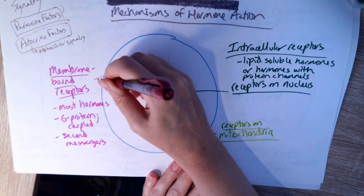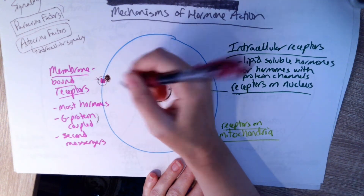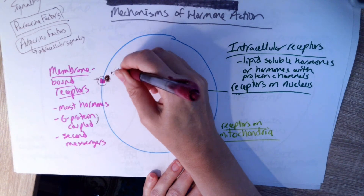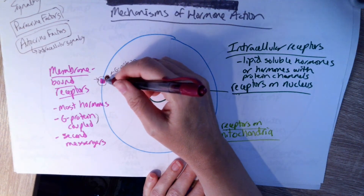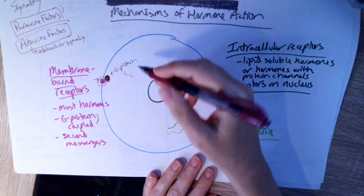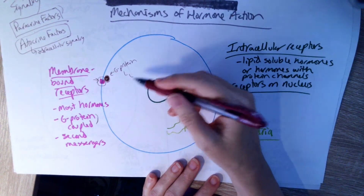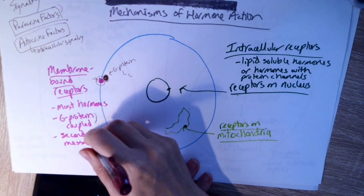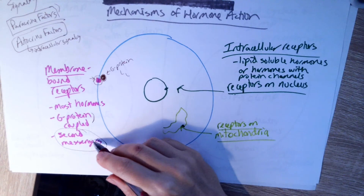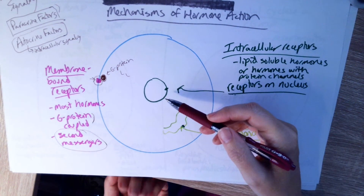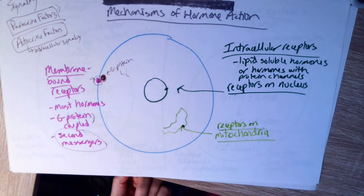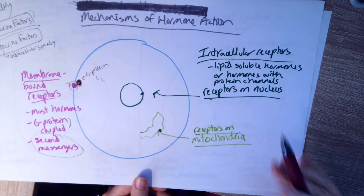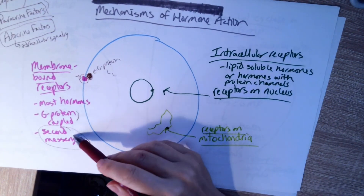There's a G-protein that's inactive until the hormone binds — it's kind of stuck to the receptor on the inside of the cell. When the hormone binds to the receptor, it changes the shape of the receptor, which activates the G-protein. Then a bunch of chemical reactions happen inside the cell causing whatever the effect may be — stimulating or inhibiting the cell. Among those chemical reactions, you get a product called a second messenger, which is essentially the chemical telling the cell what to do.